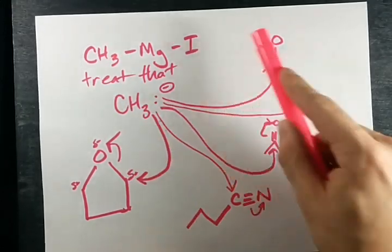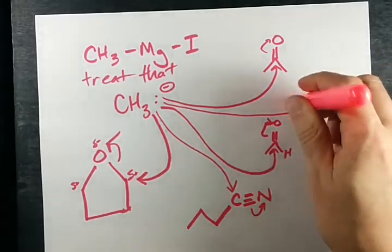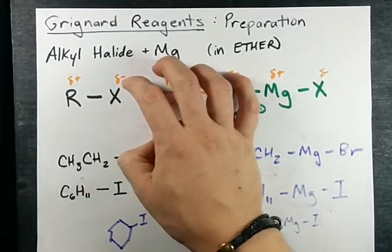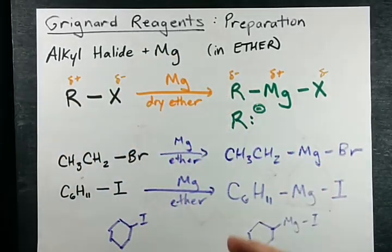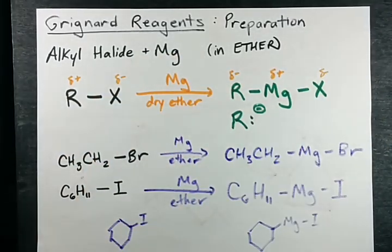These Grignard reagents can react with any molecule that has a delta plus center the same way a nucleophile would. And that is the rest of the story. Grignard reagents - easy to make. Watch some of my other videos for the reactions and mechanisms. Best of luck.